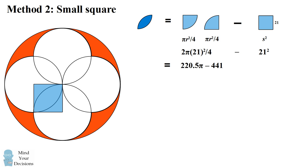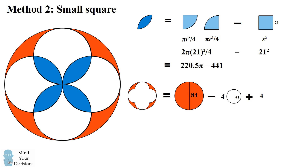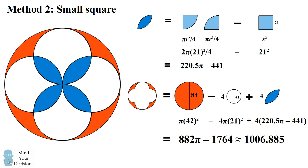So how is this going to help us solve the problem? We want to know the area of the region we've removed. This will be equal to the area of the four smaller circles, and then we have four of these overlapping regions. So we don't want to over-count the area that we're removing, so we're going to add back these overlapping regions. The area of the shaded region equals the area of the large circle minus the area of four of the smaller circles, then adding back in four of these overlapping regions. Interestingly, the large circle actually has an area equal to four of the smaller circles, so the shaded region equals the area of these four overlapping regions, giving 882 pi minus 1764, or approximately 1006.885.